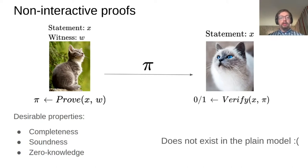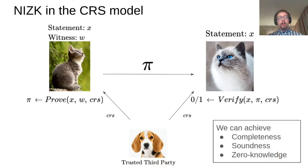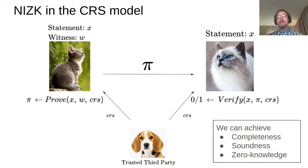Sadly, this does not exist in the plain model — it's a non-impossibility result, so you need to bypass this somehow. One way to do this is to work in the CRS model, or common reference string model. This is a model where the prover and the verifier share some common reference string generated by a trusted third party, and use this to do the proving and the verification of the statement. So then you can get non-interactive zero knowledge in the CRS model, and we can actually achieve completeness, soundness, and zero knowledge, as long as the third party that generated the CRS was behaving honestly.